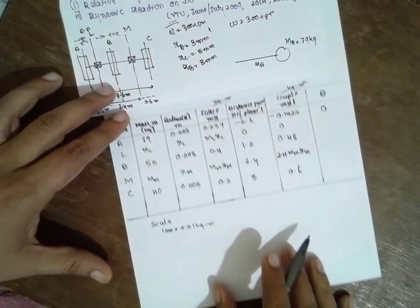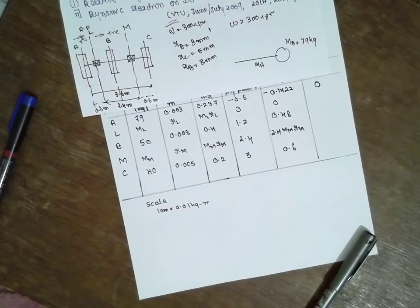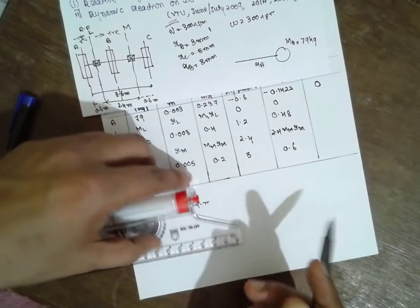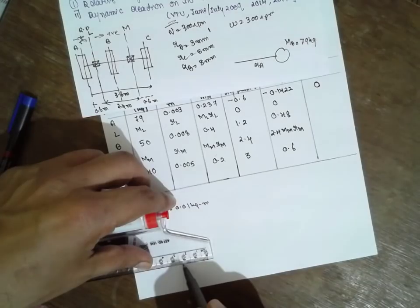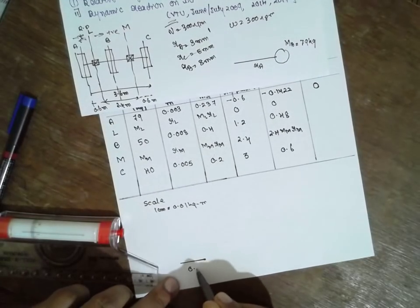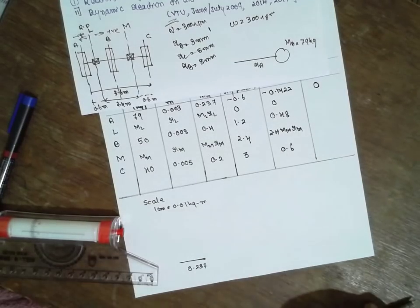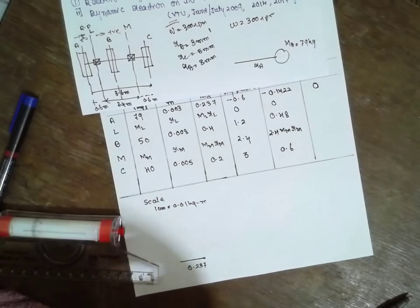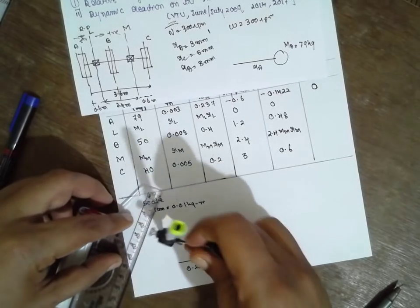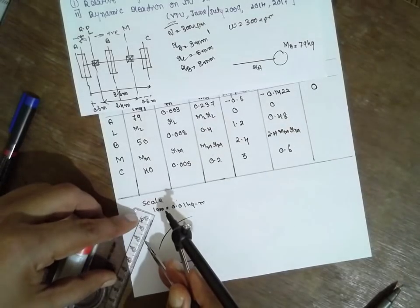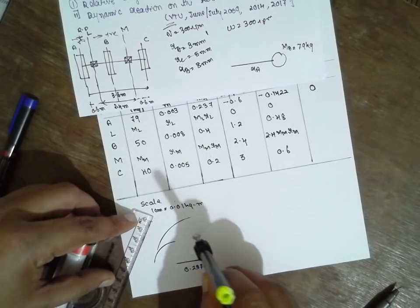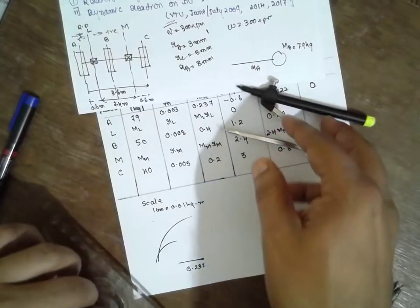If you take the scale, 0.237 at zero degrees. Next is 0.4 from this point. Cut an arc. Next 0.2, cut an arc. Now draw the lines to construct the force polygon.